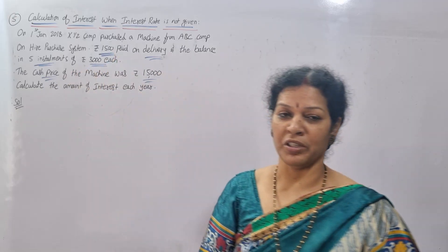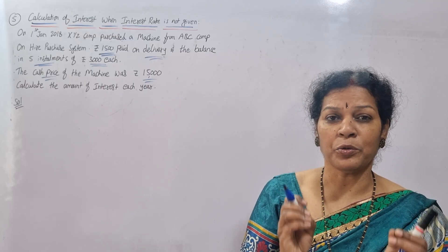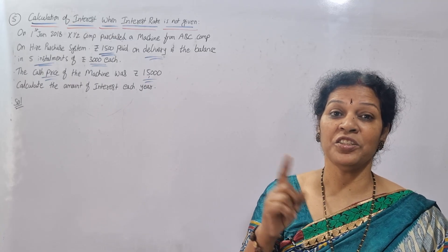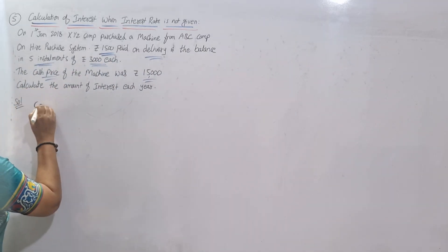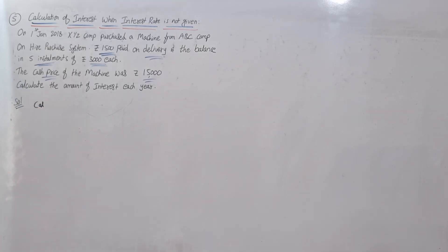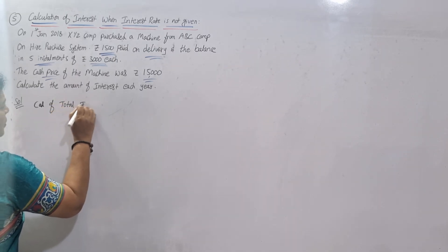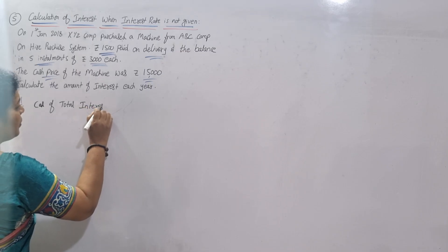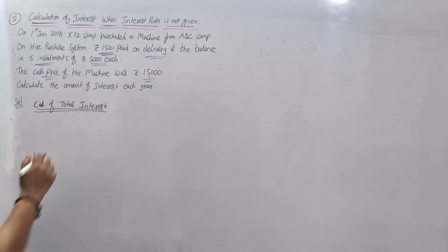Since there are five installments of ₹3,000 each, that means five years. We have to calculate the interest for each year. First, we will calculate the total interest, and after that we can calculate each year's interest. Let's begin: calculation of total interest.